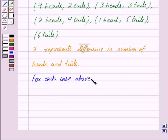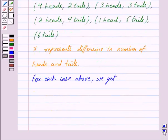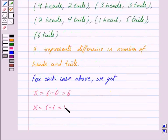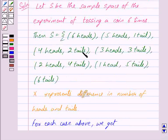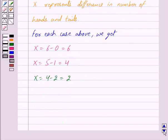For the first outcome of 6 heads and 0 tails, X is equal to 6 minus 0, which equals 6. The second outcome is 5 heads and 1 tail, so X equals 5 minus 1, which equals 4. The third outcome is 4 heads and 2 tails, so X equals 4 minus 2, which equals 2. The next outcome is 3 heads and 3 tails, so X equals 3 minus 3, which equals 0.